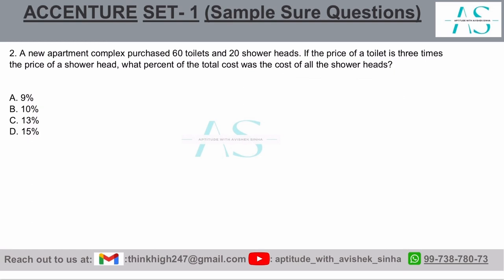First, let's find the total cost. That would be equal to 60 toilet heads plus 20 shower heads — let's denote this as our total cost. The relation given is that a toilet head (t) is equal to three times the price of a shower head (s).